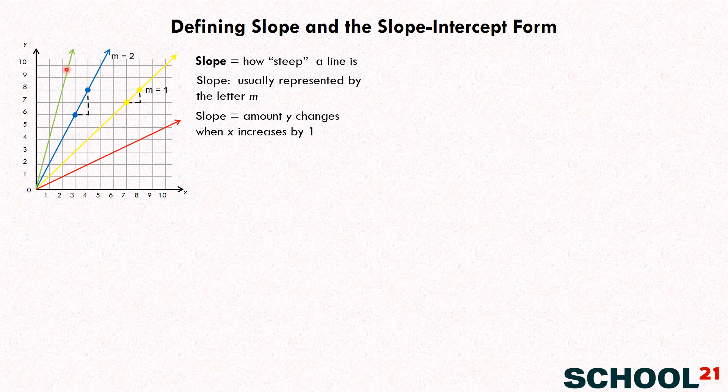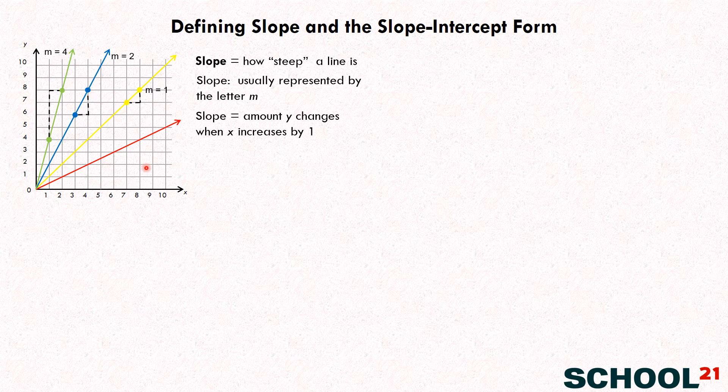And let's look at this line over here. I'm going from this point to this point. X is increasing this one right here. How much is Y increasing? Let's see. One, two, four. Four. Yeah, good. So M equals four there. So this making sense so far? Yeah.